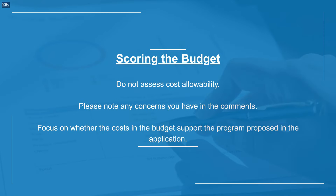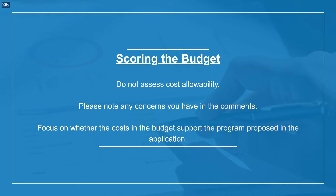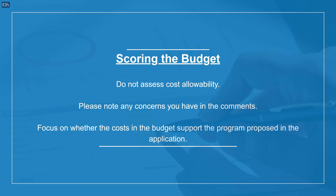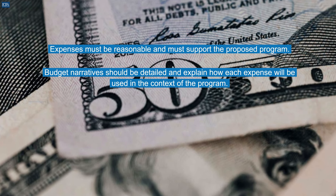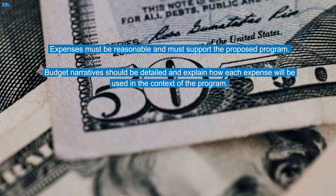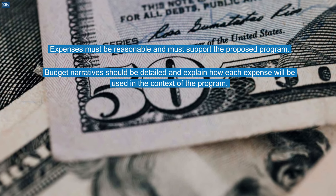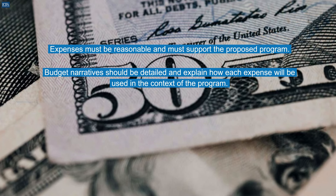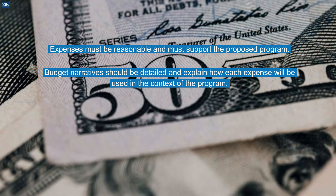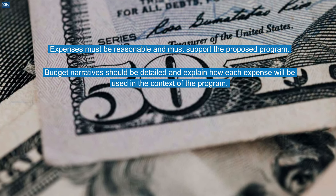Scoring the budget. Do not assess cost allowability, but please note any concerns you have in the comments. Focus on whether the costs and the budget support the program proposed in the application. Expenses must be reasonable and must support the proposed program. The budget narrative should be detailed and explain how each expense will be used in the context of the program.